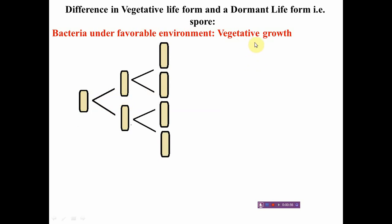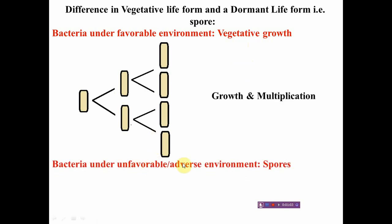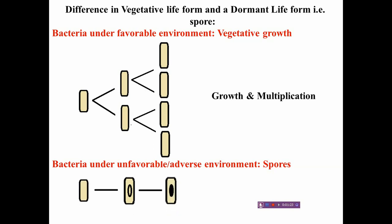What happens if cells are subjected to an unfavorable or adverse environment? If the conditions are not suitable for bacterial growth — if the cells are subjected to starvation — the cells will produce an egg-like dormant structure within the cell. That egg-like structure retains the potential of the cell, and this structure grown within the cell is called an endospore.